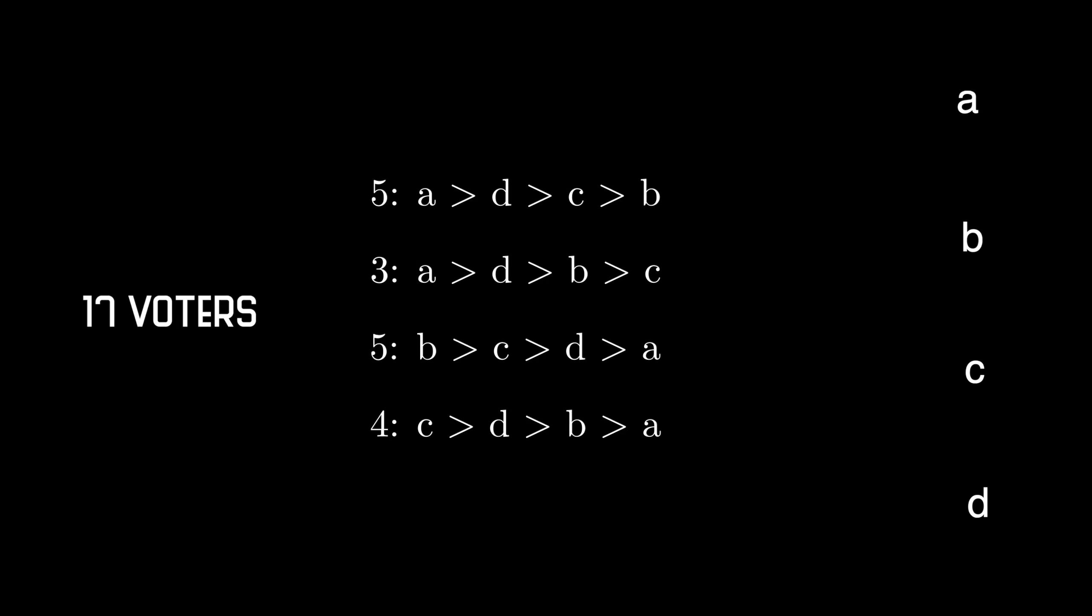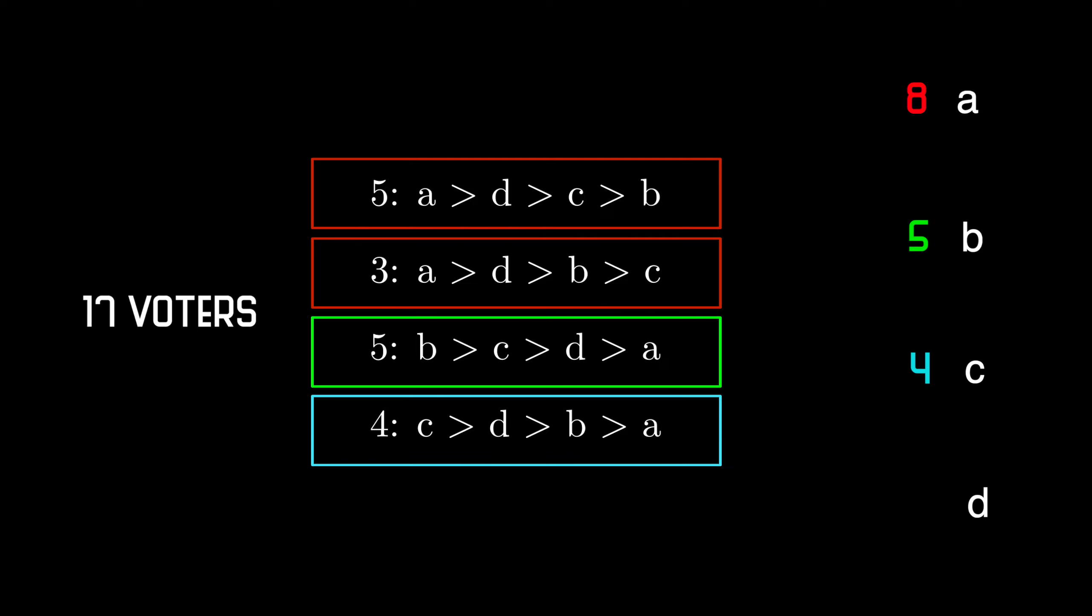So this table tells us that 8 voters chose A as their top candidate, while 5 voters chose B, and 4 voters chose C.